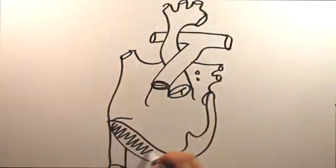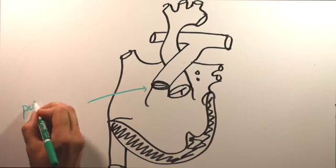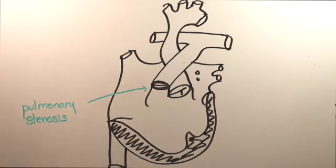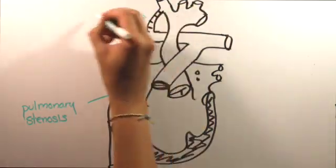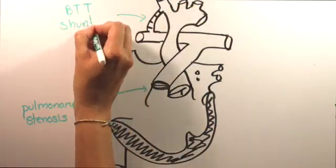In addition to the pulmonary outflow tract, some other source of pulmonary blood flow from the systemic circulation is needed. In this case, a BTT shunt because the patient has pulmonary stenosis and wasn't getting enough blood flow to the lungs from the heart.